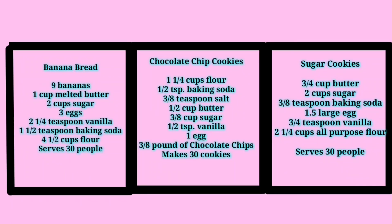Chocolate chip cookies: 1 and 1/4 cups flour, 1/2 teaspoon baking soda, 3/8 teaspoon salt, 1/2 cup butter, 3/8 cup sugar, 1/2 teaspoon vanilla, 1 egg, and 3/8 pound of chocolate chips.